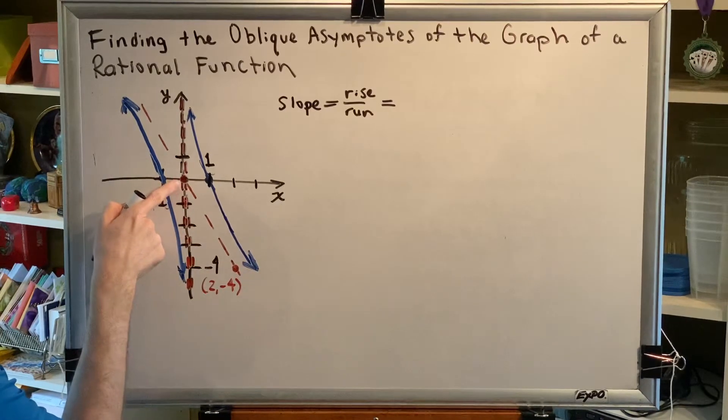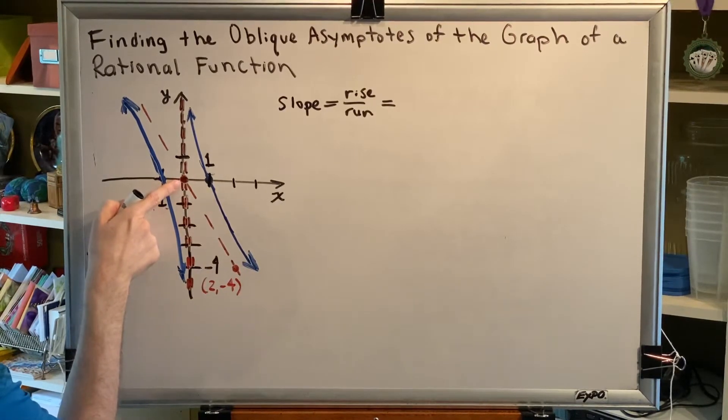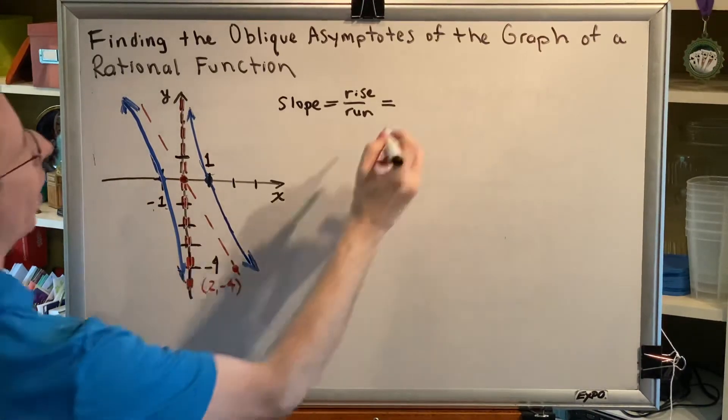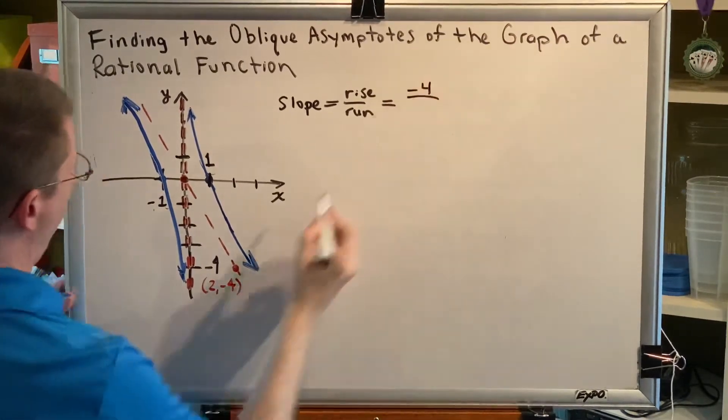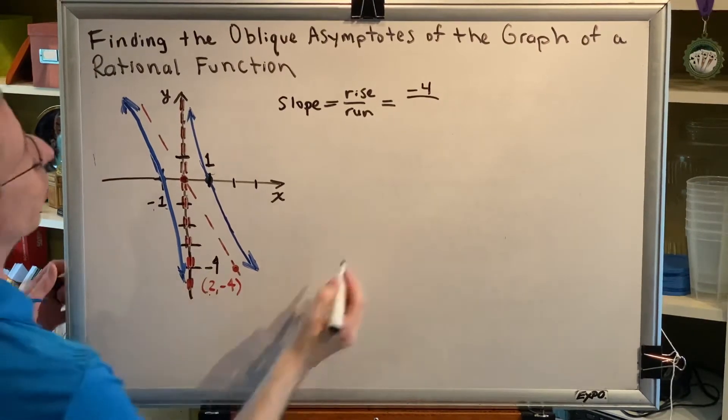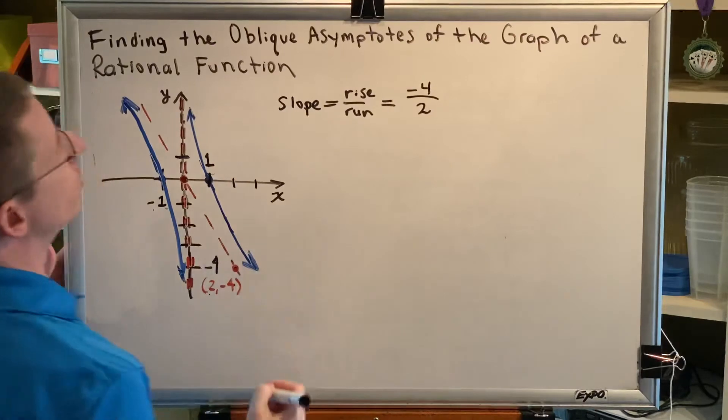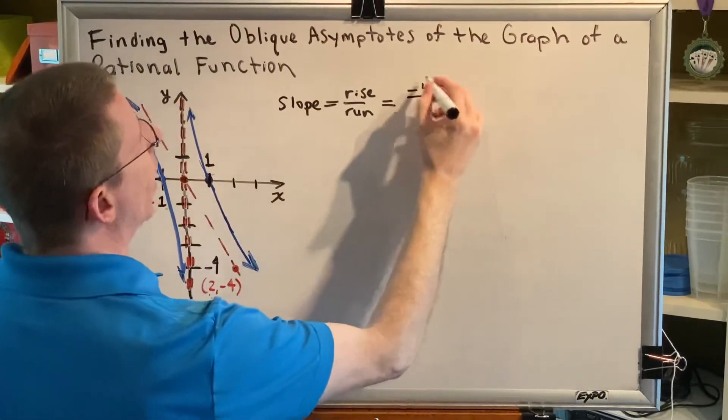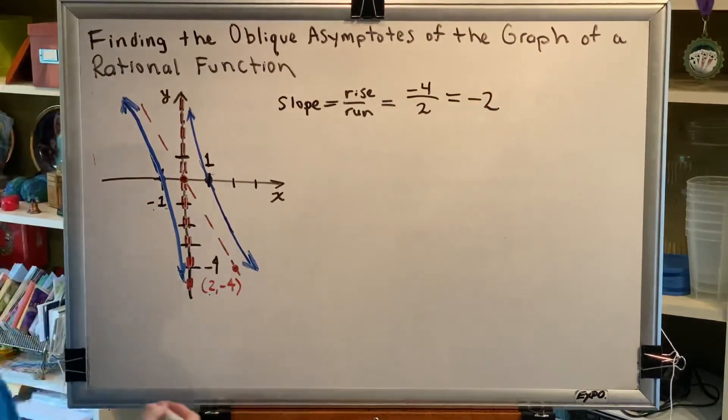So let's do the rise first. We're going down four steps, so our rise is negative four. Then we're going to the right two steps, which gets us to an x coordinate of two. So our run is positive two. Negative four divided by positive two is negative two.